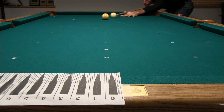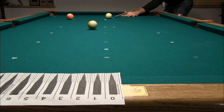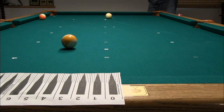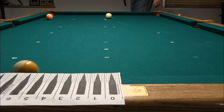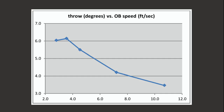Notice how much spin gets transferred to the 9 ball when there is cut-induced throw — the stripe doesn't stay vertical as with the straight shot. Here's a summary of the measurements and calculations. The smallest amount of throw was about 3.5 degrees, and the largest was about 6 degrees. Here's a plot of the data showing how throw is less at higher speeds.